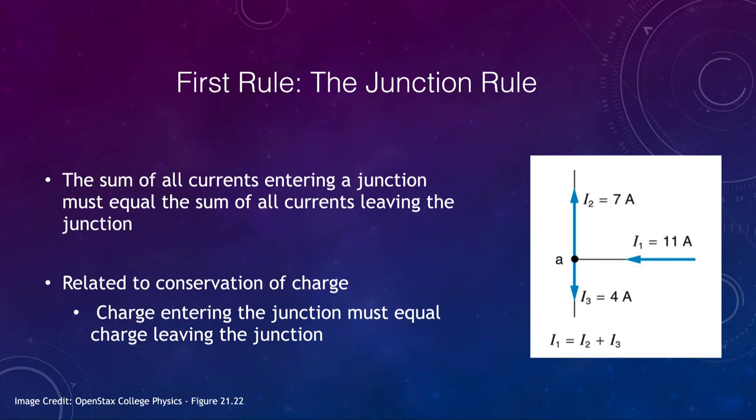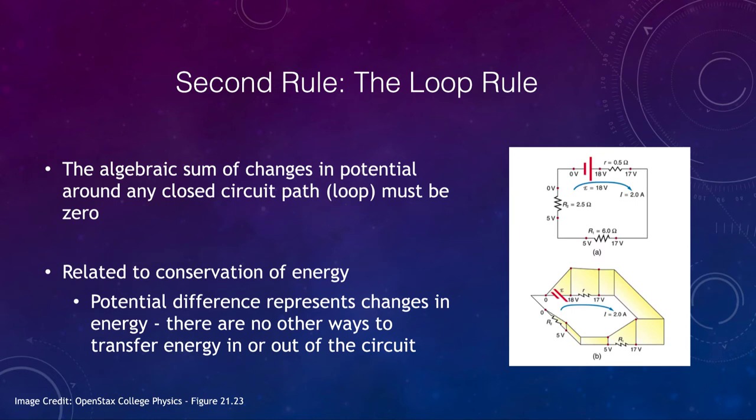Now the second rule is the loop rule. So the loop rule here says that the algebraic sum of changes in potential, so that's the voltages, in any closed circuit path, so any loop that closes back around on itself, must be equal to zero. So we'll have positive and negative changes, and you have to end up back at zero where you start.